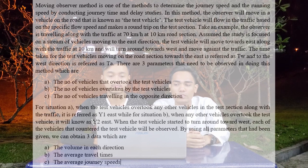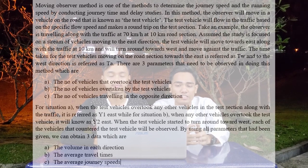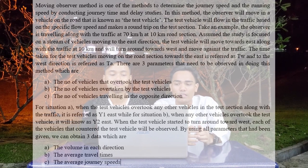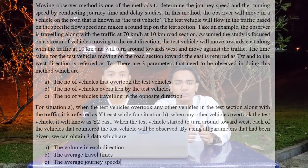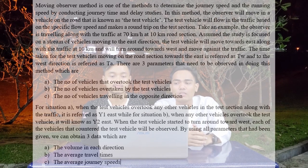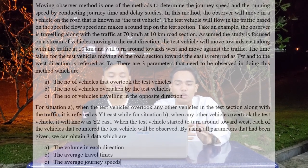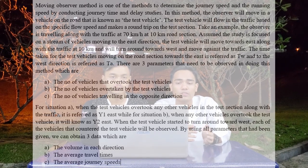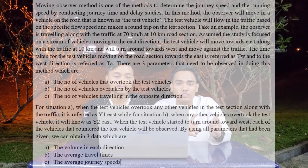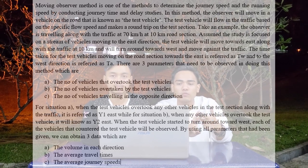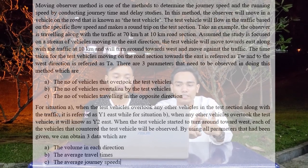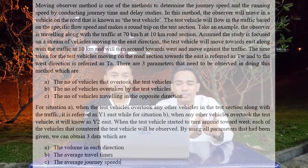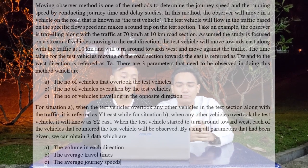The time taken for the test vehicle moving on the road section toward the east is referred to as TW, and to the west direction is referred to as EA. There are 3 parameters that need to be observed in this method: first, the number of vehicles that overtook the test vehicle; number 2, the number of vehicles overtaken by the test vehicle; and lastly, number 3, the number of vehicles traveling in the opposite direction.